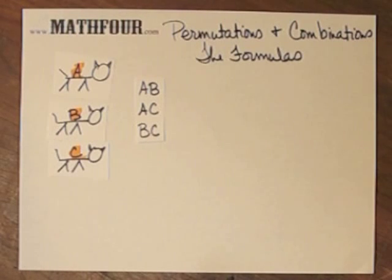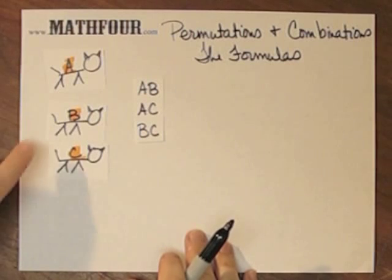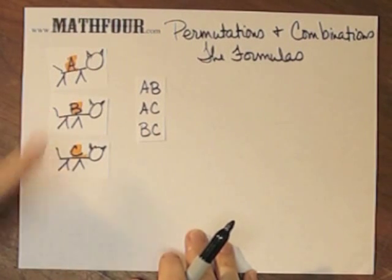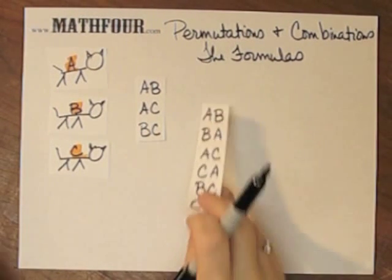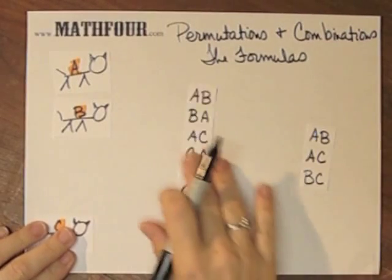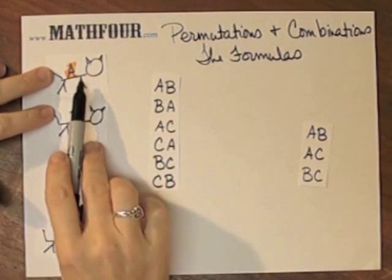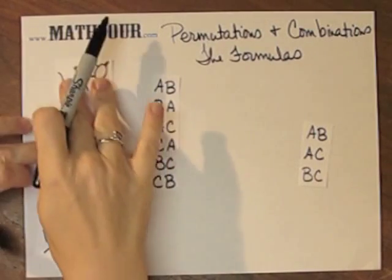Now suppose I say I want to choose one cat to come home with me and one cat to go to my niece's house. So I can choose these two, but I can choose this one to go home and this one to go to my niece's house, or switch.